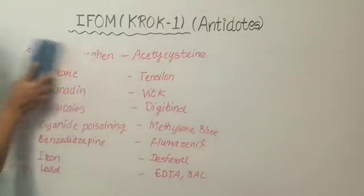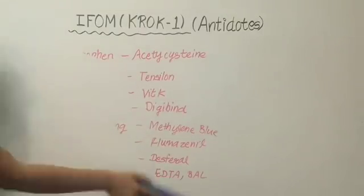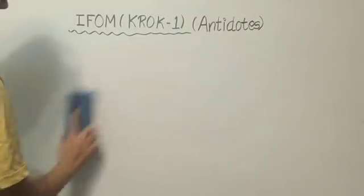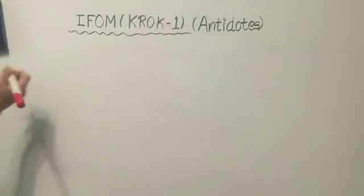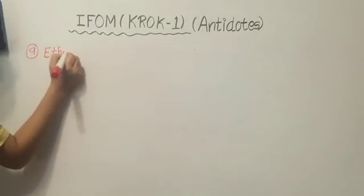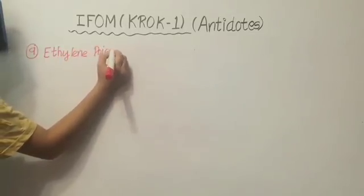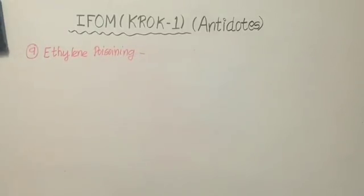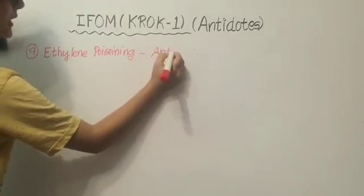We will discuss more than 40 drugs and their antidotes in this video. Our next drug is ethylene glycol poisoning. The antidote of ethylene glycol poisoning is antizole (fomepizole).